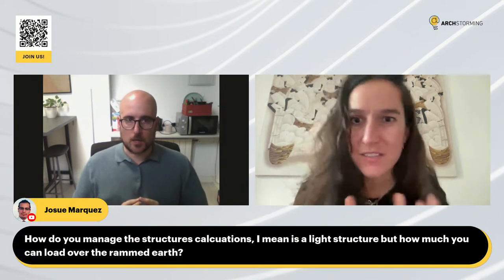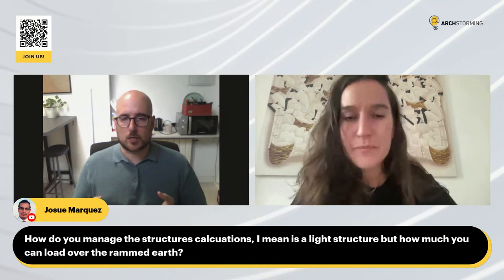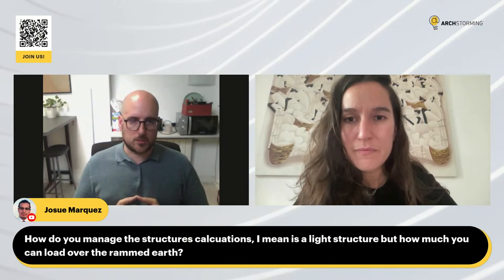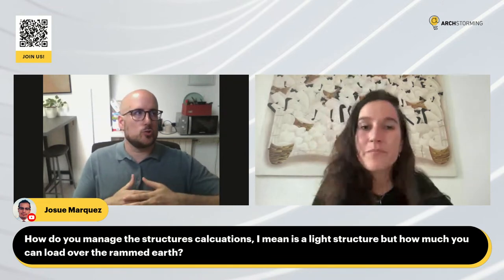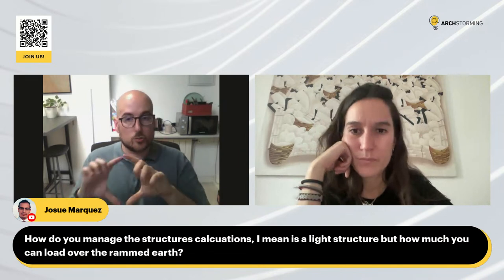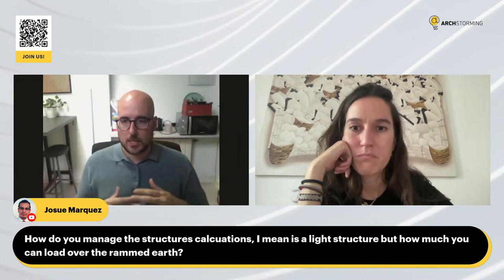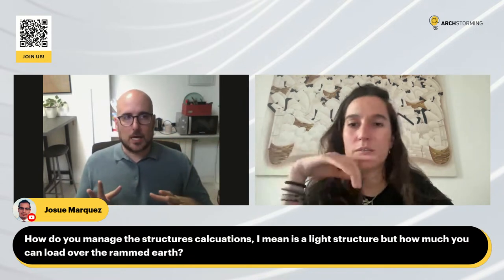I didn't run calculations for the load-bearing of the wall — it was the least of my structural worries. I was more worried about the wood. For just one story with two to three meters of wall height, there's no problem. Other projects on the same campus had walls of three and a half meters with no issues. Most roofs built in Ghana are made of wood and metal sheeting, so the roof structure is extremely light.